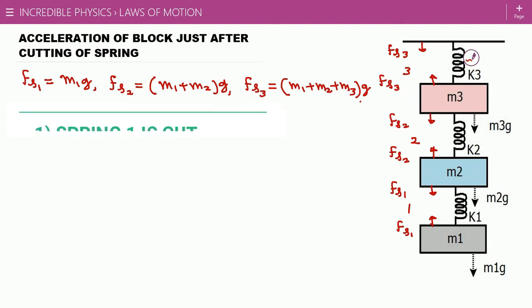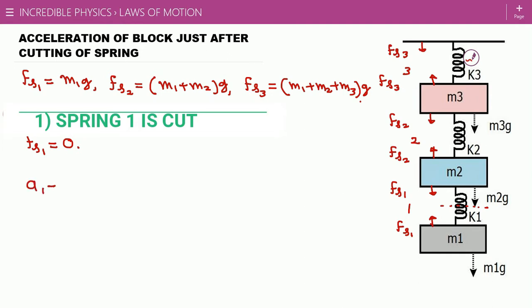Now we consider case one where spring one is cut. When spring number one is cut, its force becomes zero instantly, while the other springs have no change in their forces. m1 will not experience any spring force in the upward direction, so it has only m1g downward. Therefore a1 equals g downward — m1 is now moving under gravity.